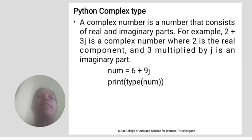Python complex type. A complex number is a number that consists of real and imaginary parts. For example, 2 plus 3j is a complex number, where 2 is the real component and 3 multiplied by j is the imaginary part. Num equal to 3 plus 9j.